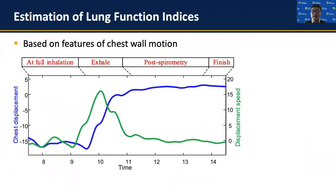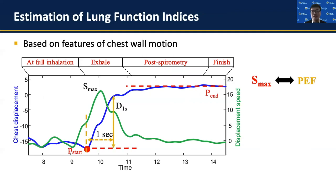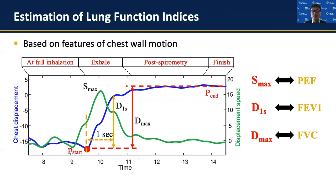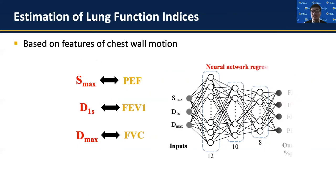To estimate lung function indices, we extract motion features from the chest wall motion during the exhalation stage. PEF, the maximum velocity of outgoing air, corresponds to the maximum speed of chest wall motion. FEV1 is represented using the chest wall displacement in the first second of exhalation. The entire chest wall displacement corresponds to FVC. These features are fed into a neural network, which performs regression to convert these features into real lung function indices.